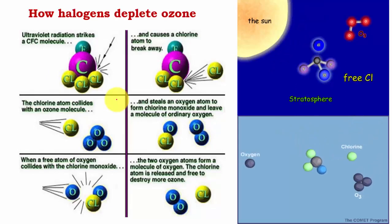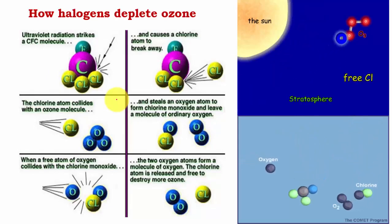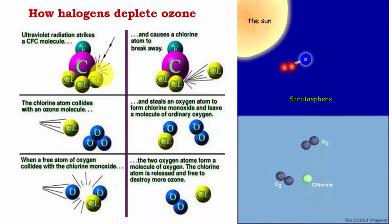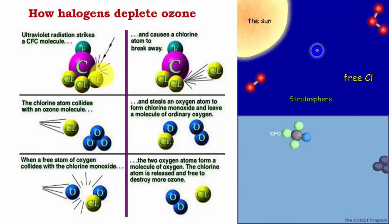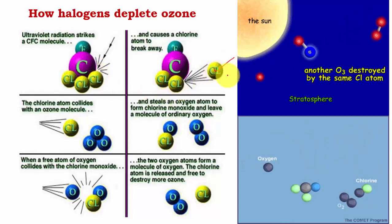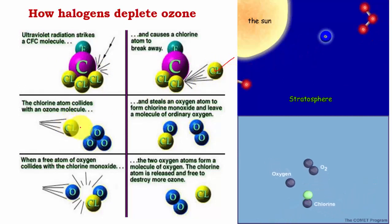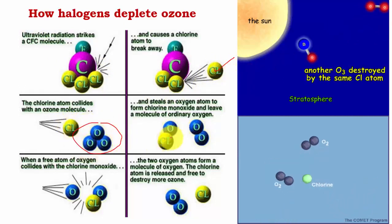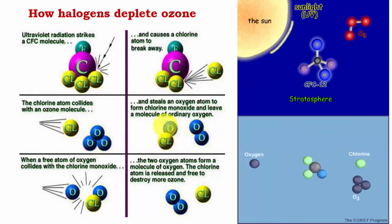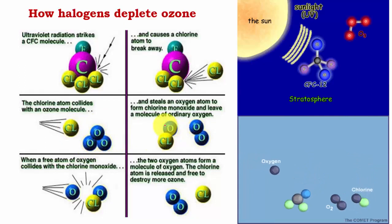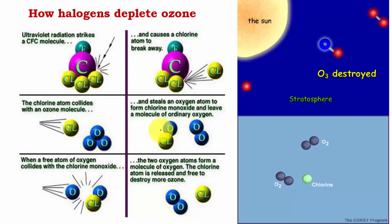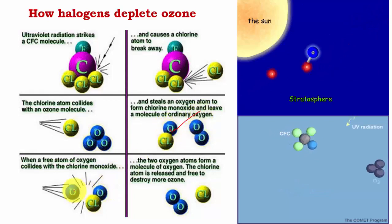In the ozonosphere, when a chlorofluorocarbon enters the layer, ultraviolet radiation causes a chlorine atom to detach and become a free, highly reactive atom. When this free chlorine atom contacts O3, it steals an oxygen atom. Like an unfaithful husband, it doesn't stick with one oxygen atom — it keeps changing partners, continuously reacting with different oxygen atoms.